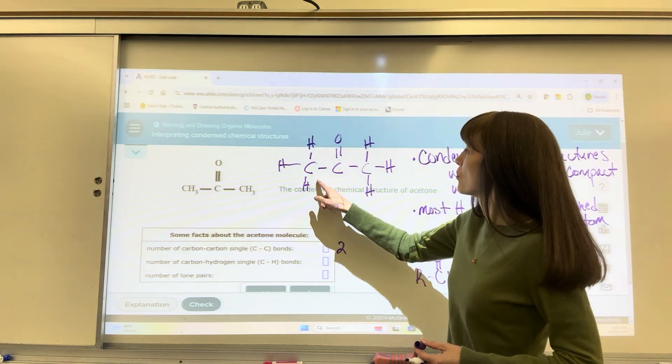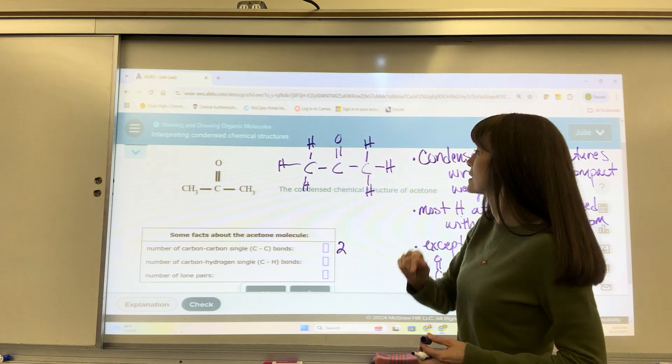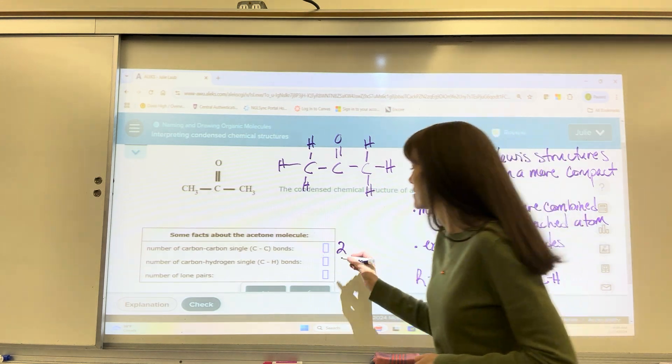Single bond to one, single bond to two, single bond to three hydrogens. So counting this, we're going to have one, two, three, four, five, six. Six total carbon-hydrogen bonds. Very good.